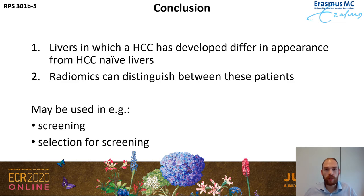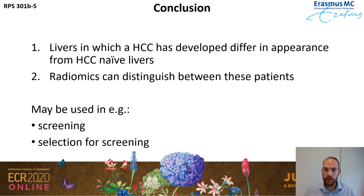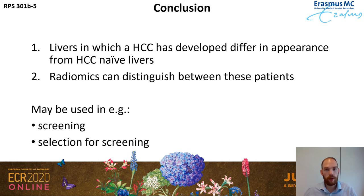So what can we conclude from these results? We see that there is a difference in appearance in livers in which HCC has developed compared to livers in which no HCC will develop, and that radiomics can actually be used to distinguish these two groups of patients. Such a model may be used in screening to distinguish between patients who are at risk for developing HCC and those who are not, and also potentially to identify patients suitable for screening.